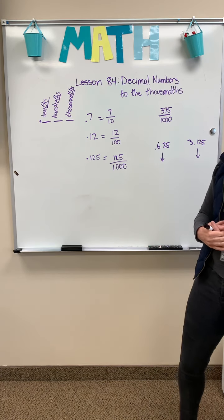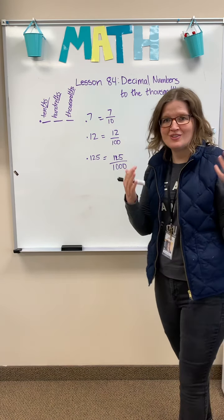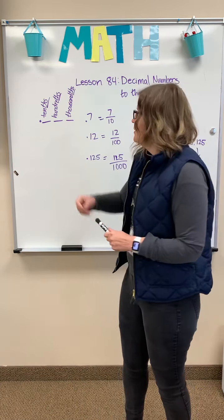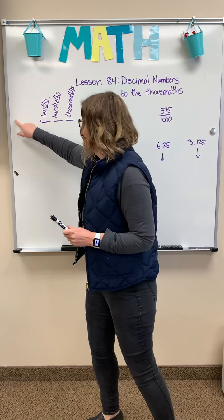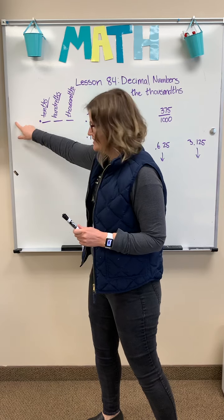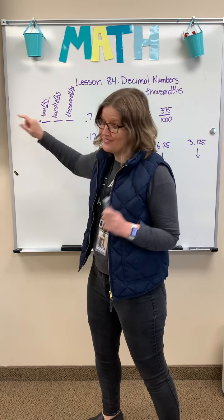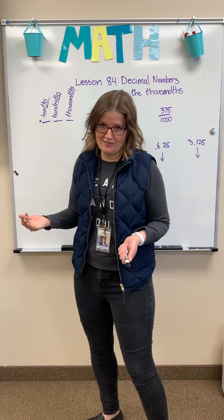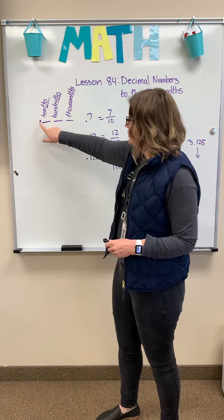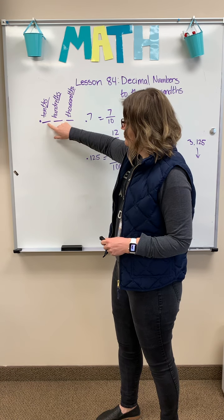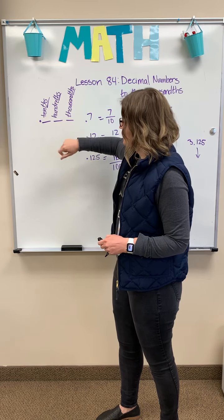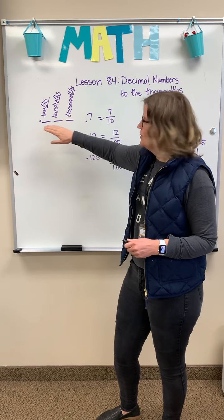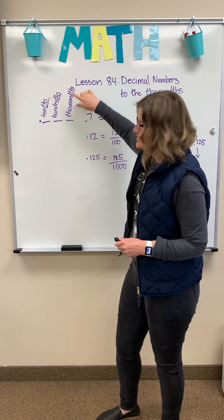Welcome to lesson 84, which is decimal numbers to the thousandths. As we've discussed earlier, just as we have place values on the left side of the decimal, we have different place values on the right side. One space to the right of the decimal is the tenths, the next is the hundredths, and finally we'll talk about the third place, which is the thousandths.